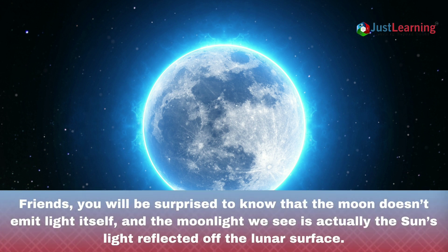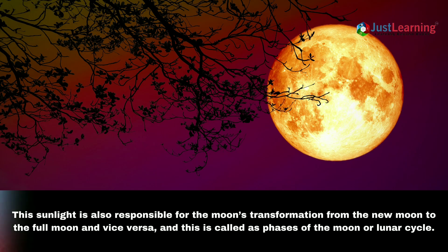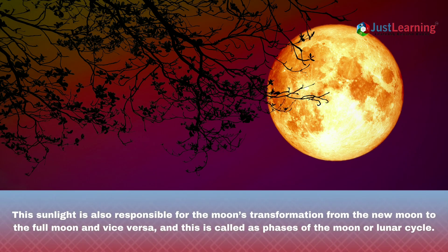Friends, you will be surprised to know that the moon does not emit light itself and the moonlight we see is actually the sun's light reflected off the lunar surface. This sunlight is also responsible for the moon's transformation from the new moon to the full moon and vice versa, and this is called the phases of the moon or lunar cycle.